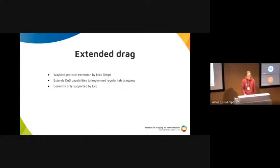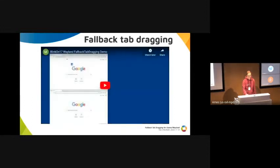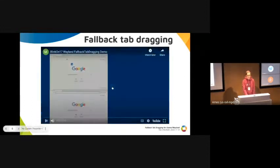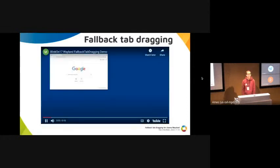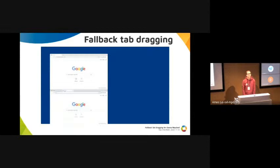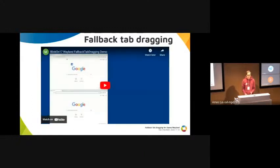This is where I come in. I implemented what I call fallback tab dragging. The idea is that we don't create a new window until the user releases the mouse, and to signal that something is going on we just show a little drag icon. So in theory it's really simple, but in practice it's been quite complicated to integrate this well into the big tab dragging state machine.